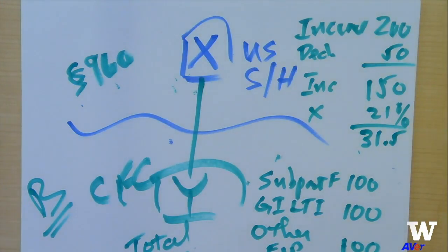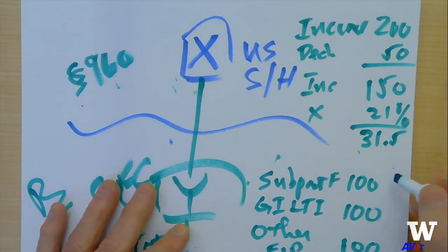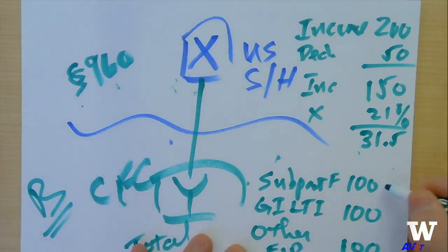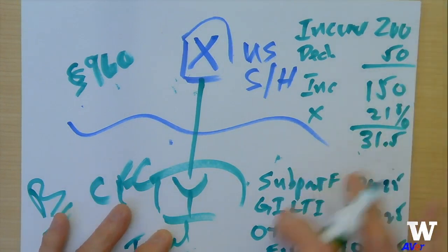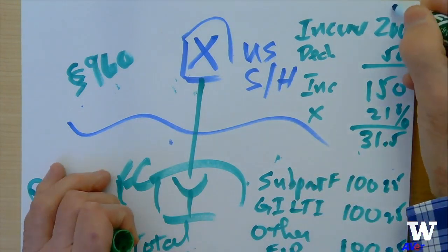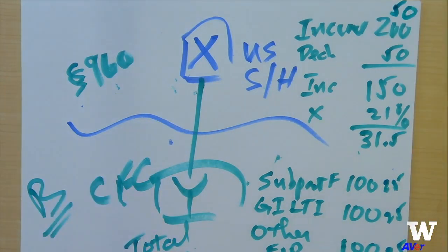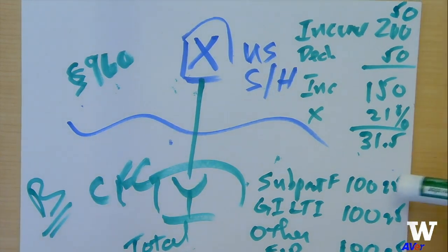Anybody remember what that is? Anybody remember the section 78 gross up? We said that there's 25 of tax associated with each of these, and that the 100 is after the 25 of tax. We include 200 under subpart F and guilty, but we also include another 50, which is going to be the section 78 gross up, which is the increase for the deemed paid taxes, and the deemed paid taxes are the 50, the subpart F, and the guilty.